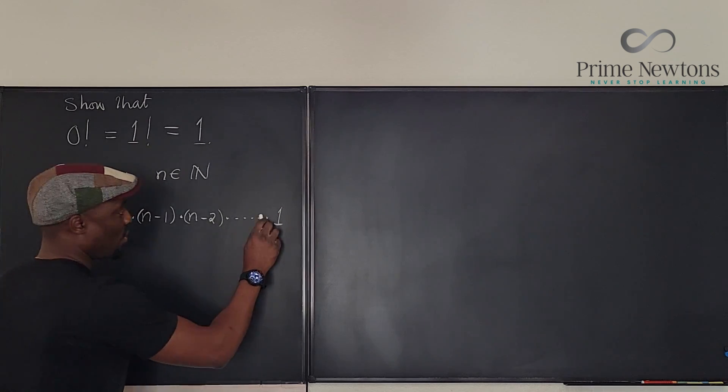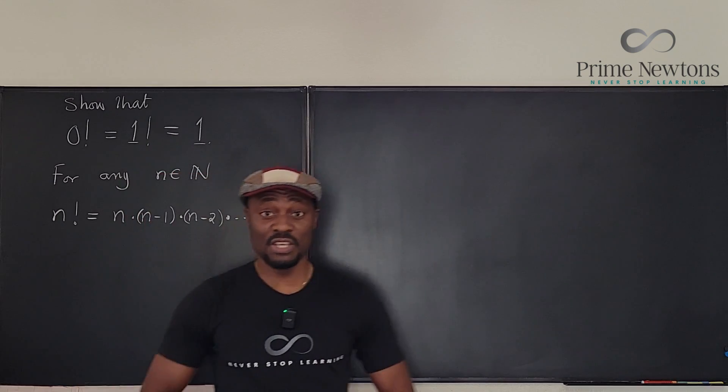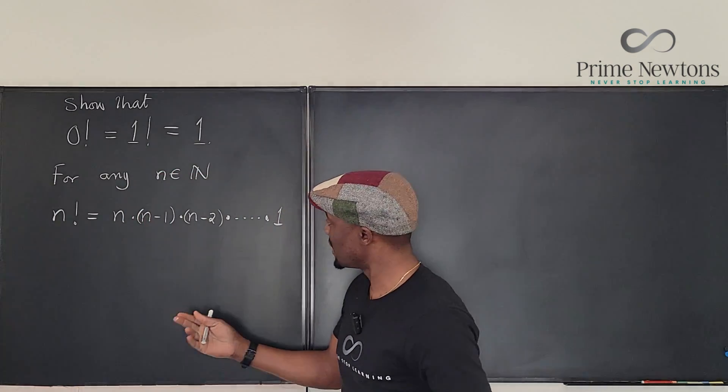This is what we call the factorial of a number. We just keep subtracting 1 until we get to the end.